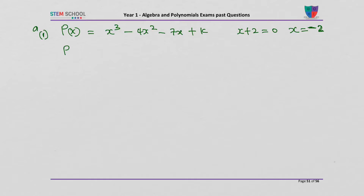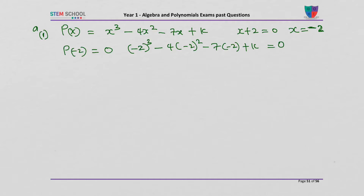If we put P of minus 2, that should be equal to 0. Therefore, we work out: minus 2 cubed minus 4 times bracket minus 2 squared minus 7 times bracket minus 2 plus k equals 0. That gives minus 8 minus 16 plus 14 plus k equals 0, which implies minus 10 plus k equals 0, so k equals 10. That proves the first part of A.